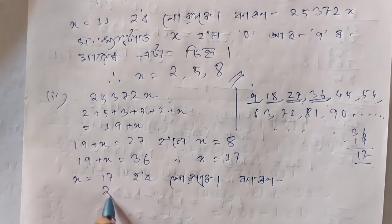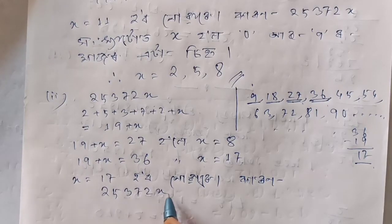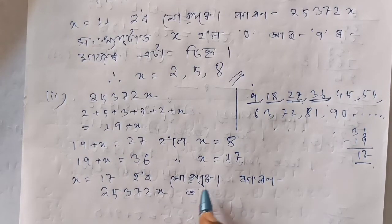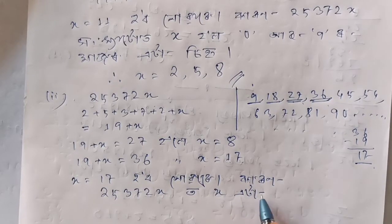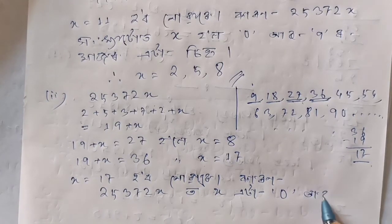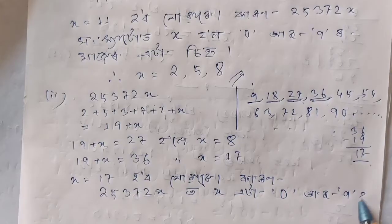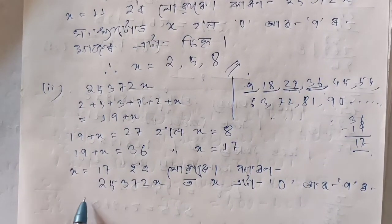This is 2, 5, 3, 7, 2, x. X can be 0 or 9, or a major digit.